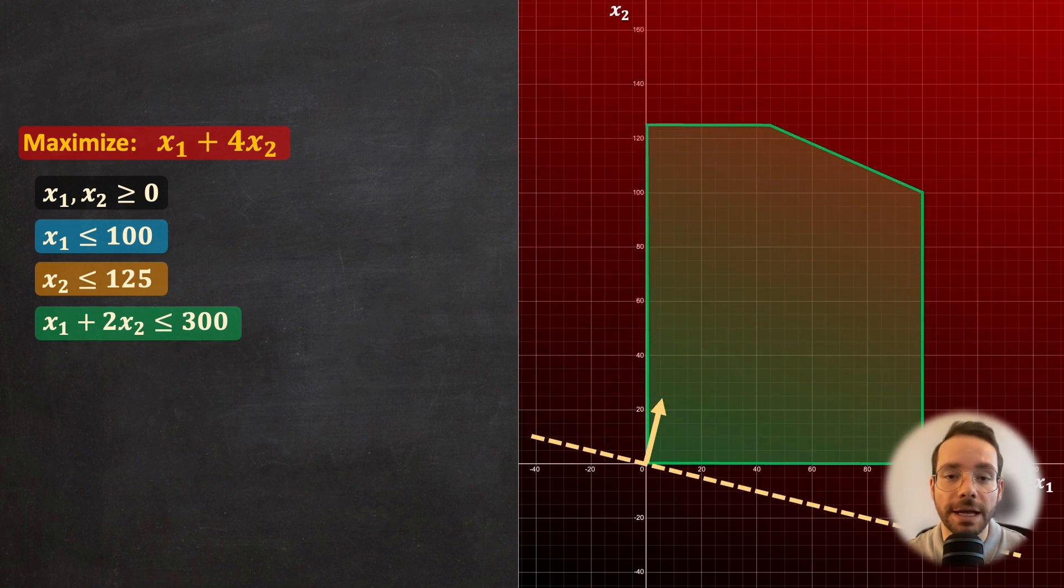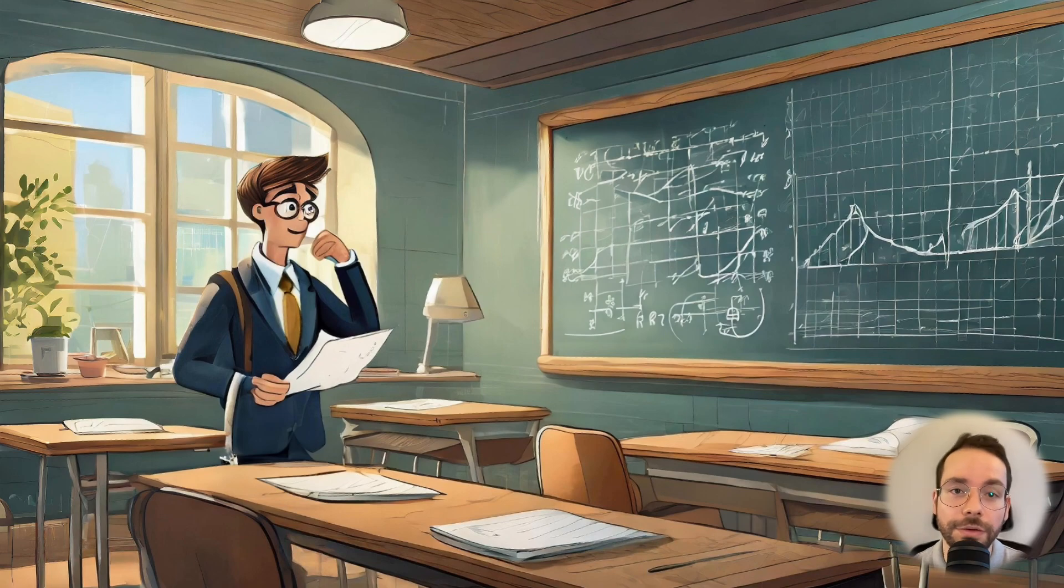While the graphical method might work with two variables, we need a systematic approach for this problem. Let me take you back to 1947. A student arrives late for his class only to find an empty classroom and some mind-boggling statistics problems on the blackboard staring back at him. What does he do? He decides to write these problems down thinking it's just the next homework assignment. Little did he know those problems were about to take him on a wild ride.